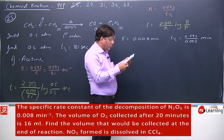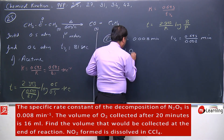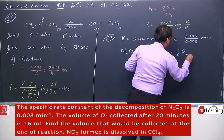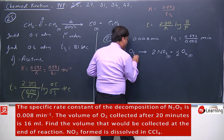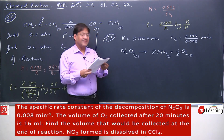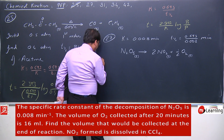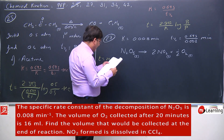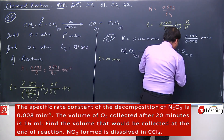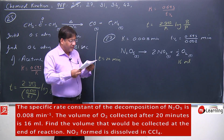The decomposition reaction of N2O5 gives 2 NO2 plus half O2. N2O5 is a gas, NO2 is a gas, and oxygen is a gas. The volume of oxygen collected after 20 minutes is 16 ml. Find the volume that would be collected at the end of the reaction.